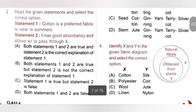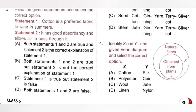Second question: Read the given statement and select the correct option. Statement 1: Cotton is a preferred fabric to wear in summer — True. Statement 2: It has good absorbency and allows air to pass through it — True. Statement 2 is the correct explanation of Statement 1. So option A is the correct answer.